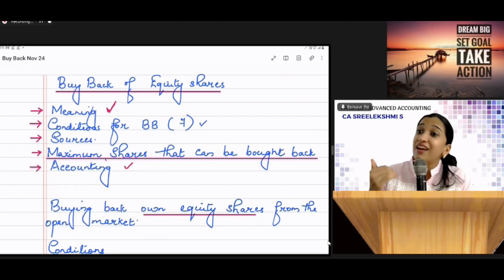Then a declaration of solvency has to be filed with ROC. You cannot use all resources for buyback. So, a declaration of solvency has to be filed with ROC.